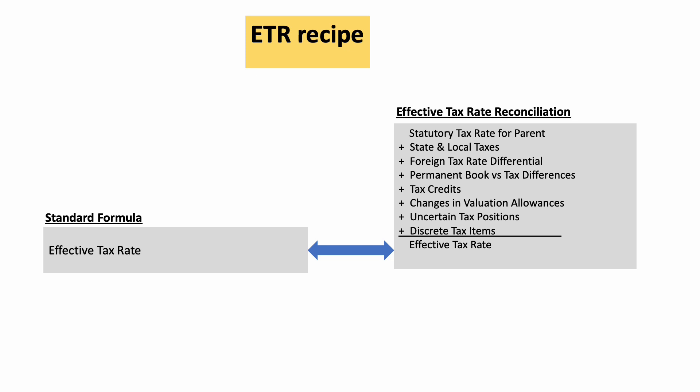Some of the permanent book-tax differences can also cause noise in your ETR reconciliation. There could be pieces of income that are not taxable for tax purposes but are shown as income in US GAAP, which will reduce your ETR as per GAAP. Your actual adjusted effective tax rate as per the tax return would therefore be less than your GAAP tax rate.